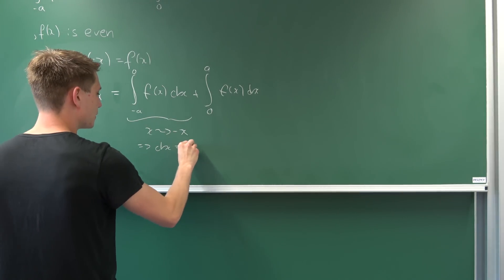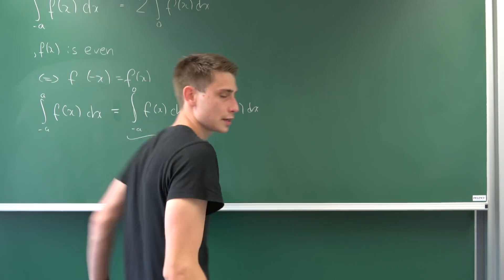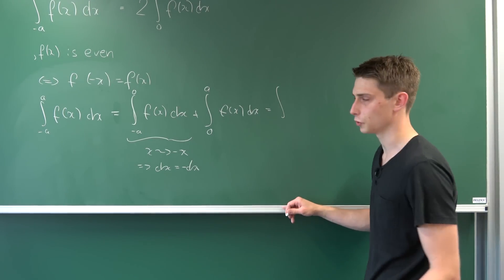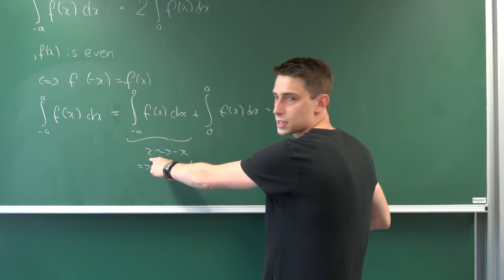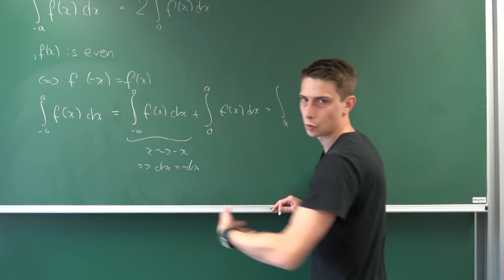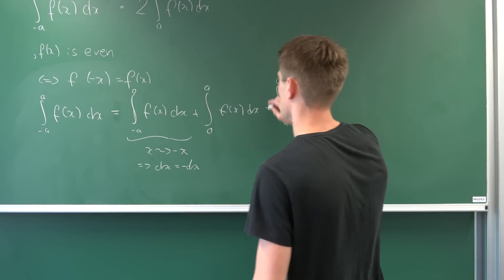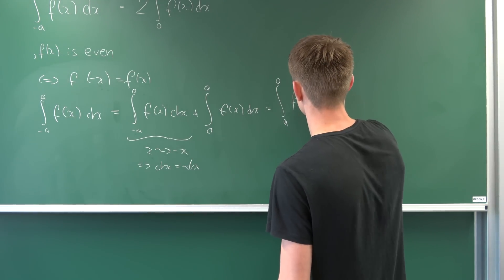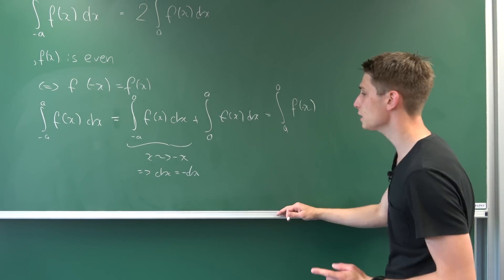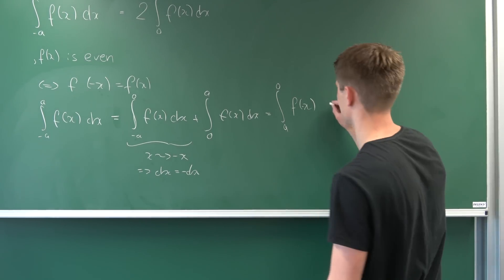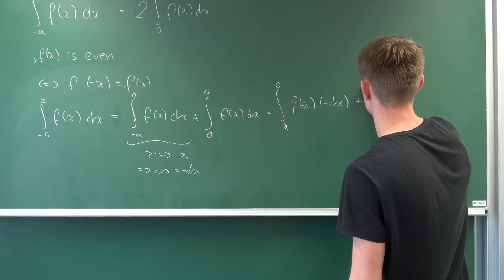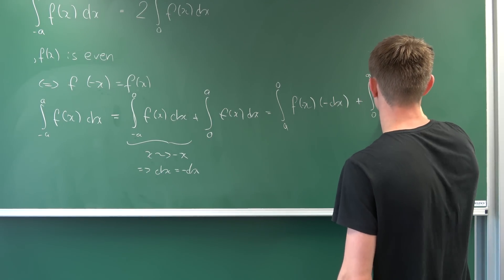That also means that dx is becoming minus dx in that case. We can work with this, because now we have an integral going from — if we plug minus a into x then we multiply it by a minus, we end up with positive a. And zero times minus one is just zero still. So we end up with f of minus x this time, because we're plugging minus x in here. Also we are transforming our dx to minus dx. That's the first step, and then adding the integral from zero to a of f of x dx to it.